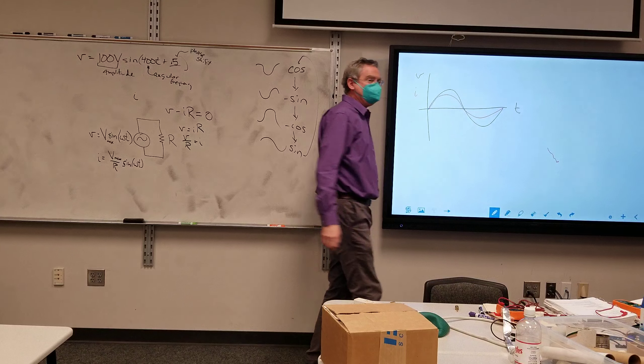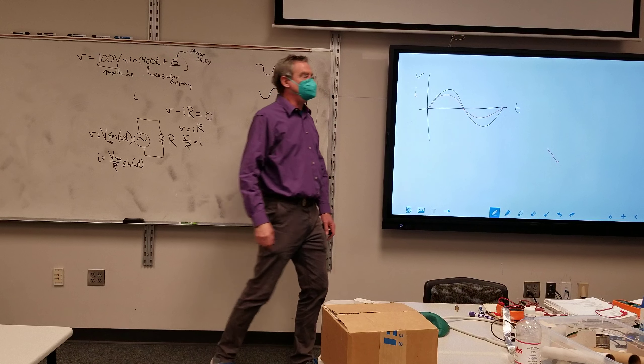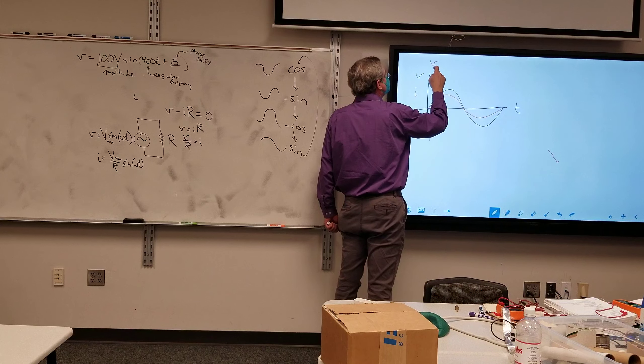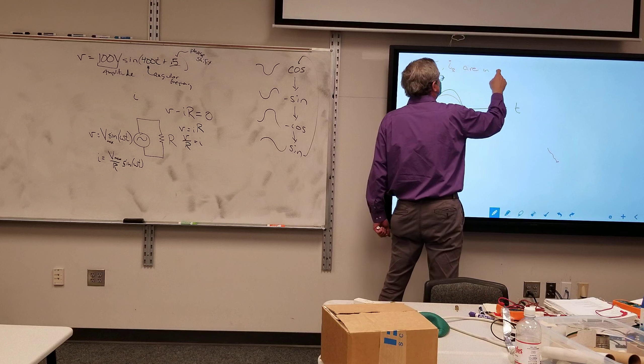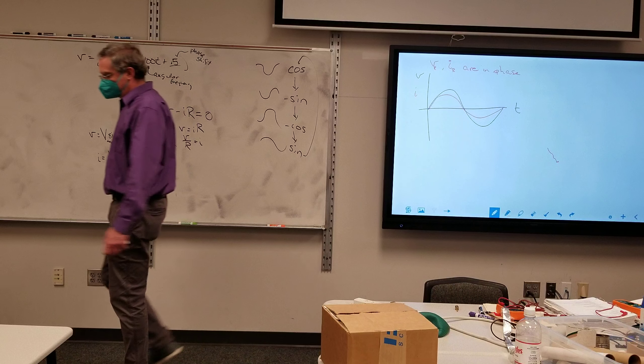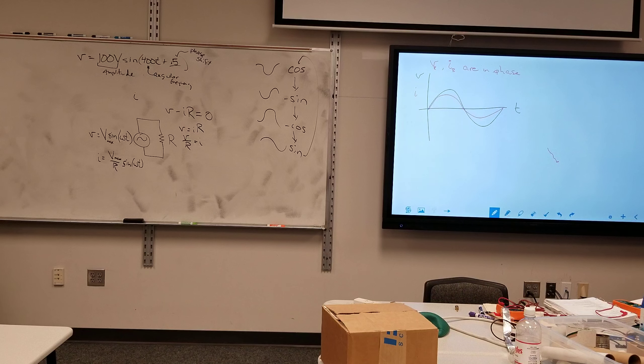I'm assuming your drawing will be better than this. So we have an important idea here that we will exploit later, is that the voltage across the resistor and the current across the resistor in an AC circuit are in phase.